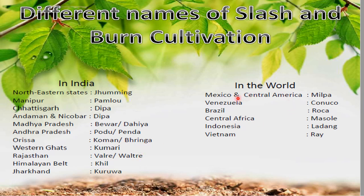While in the world, in Mexico and Central America it is called Milpa; in Venezuela and South America it is called Conuco; in Brazil it is called Roca; in Central Africa it is called Masole; in Indonesia it is known as Ladang; and in Vietnam it is called Ray.